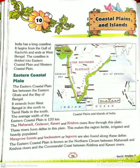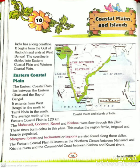The Mahanadi, Godavari, Kaveri and Krishna rivers flow through this plain. These rivers form deltas in this plain. 'Delta' means an area of low, flat land — sometimes shaped like a triangle — where a river divides into several smaller rivers before flowing into the sea.